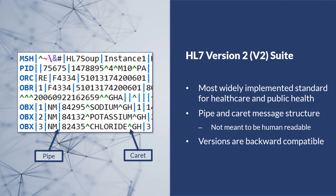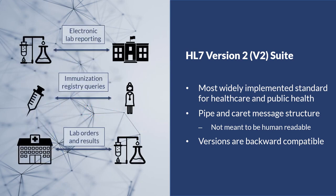HL7 standards are built to be backward compatible, meaning that a later standard would not replace anything in a previous standard, but rather add to the previous standard. Today, around 95% of healthcare organizations in the United States use some HL7 standard for health data exchange. In public health, HL7 messages are commonly used for electronic lab reporting from labs to public health agencies, queries to and responses from immunization registries, and for lab order and results interfaces between labs and submitters, such as hospitals and healthcare providers. The most common V2 versions currently used in public health are V2.3.1 and V2.5.1.